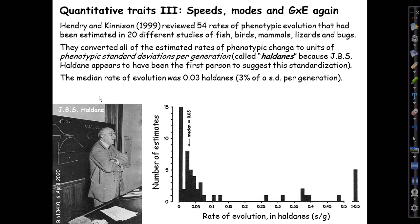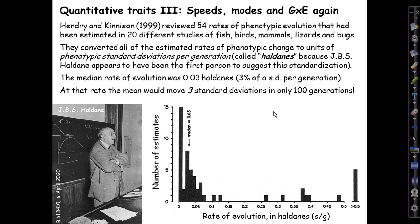I've made a histogram of all the rates detailed in their big table from these 20 studies, and it turns out the median rate — shown here in the middle of the distribution — was 0.03 Haldanes, which is to say 0.03 standard deviations per generation, or three percent of a standard deviation of change every generation. At that rate, the mean value of the trait would move three standard deviations in just a hundred generations, which in evolution is just a blink of the eye.